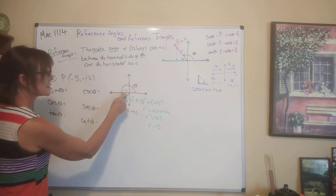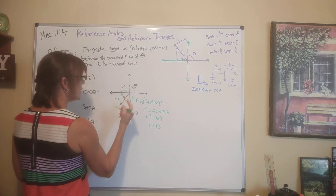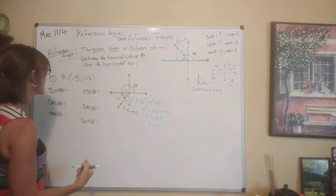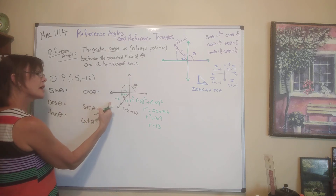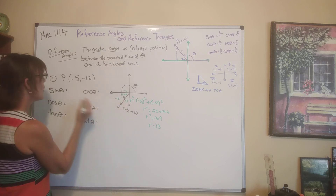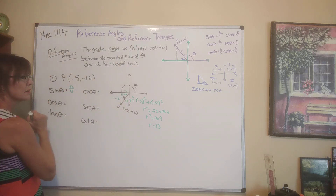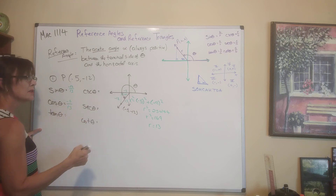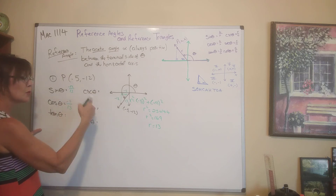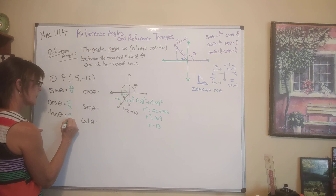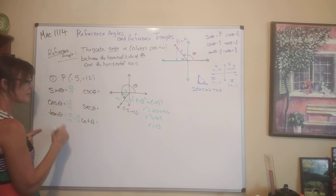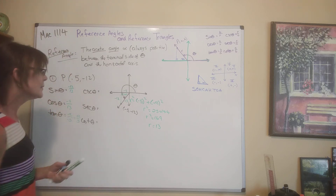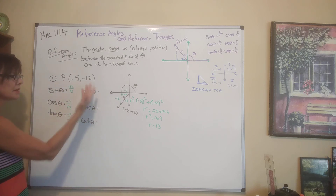Now we can use SOHCAHTOA with this little triangle. The sine of theta — looking at alpha — is opposite over hypotenuse, which is negative 12 over 13. Cosine is adjacent over hypotenuse, negative 5 over 13. Tangent is opposite over adjacent, negative 12 over negative 5, which equals positive 12 over 5.